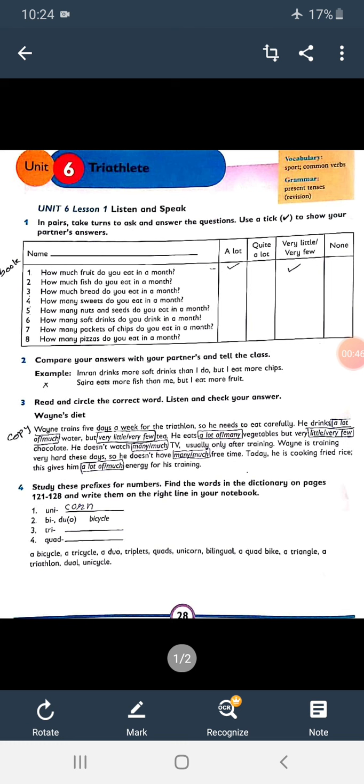There is a table with different columns. In the first column, you have to enter your name or your partner's name. There are some questions. How much fruit do you eat in a month? A lot, quite a lot, very little, very few, none. Number 1, how much fruit do you eat in a month? You have to take your partner's recording options.